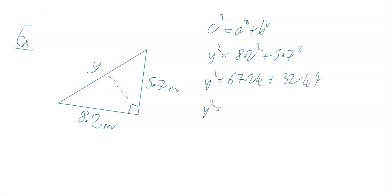Then y² equals, so I just add the two of those together. 67.24 + 32.49 equals 99.73. Then y just equals the square root of that. So √99.73 gives 9.98649, and there are a few more numbers on your calculator.